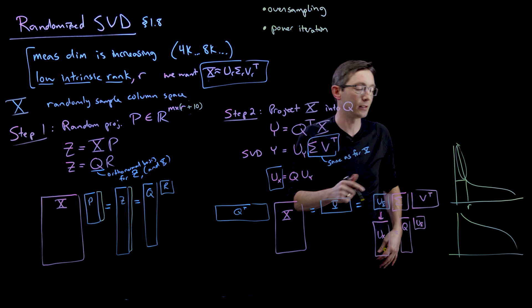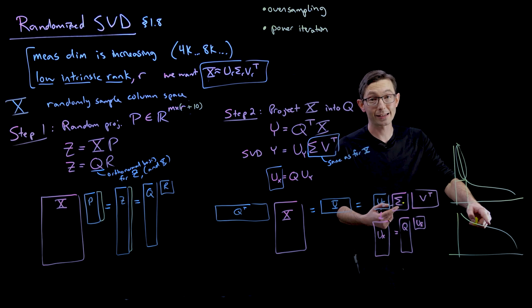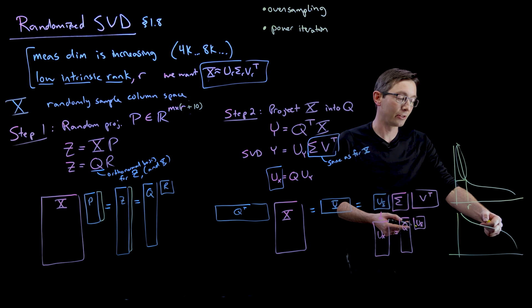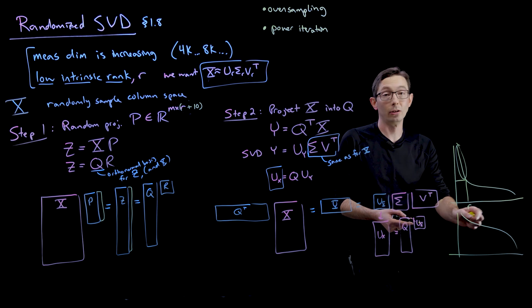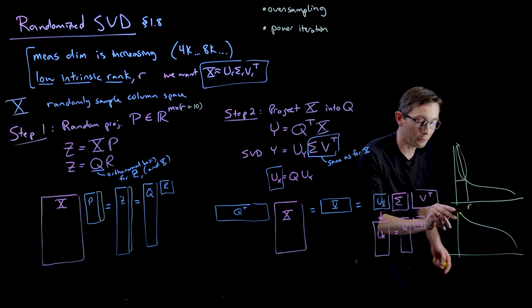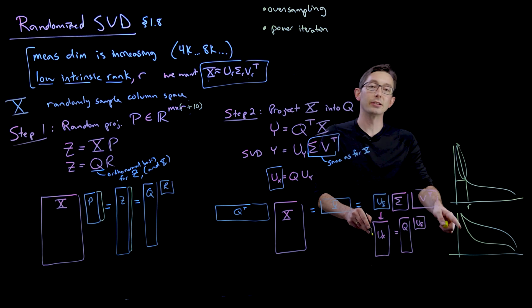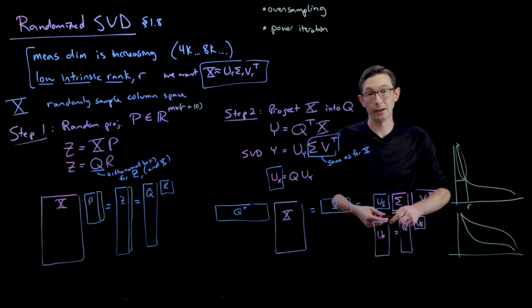This is the singular value distribution of X, but the singular value distribution of X squared would square all of these, so the little ones become even littler. So by taking power iterations, you can essentially drive this singular value distribution down until it looks more like what you want it to look like.